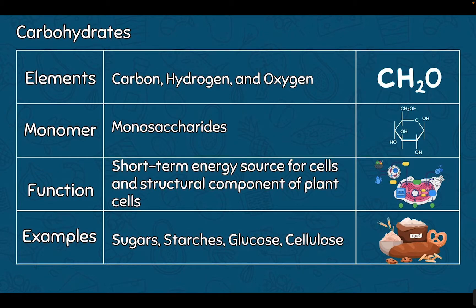Our first macromolecule or biomolecule are carbohydrates. Carbohydrates consist of the elements carbon, hydrogen, and oxygen — only these three elements. They are always going to be in a two-to-one ratio of hydrogens to carbons, shown as CH2O. The monomer — the subunit that builds them up — are the monosaccharides. Saccharides means sugar, mono meaning single. So a single sugar is the building block, and we can make large chains of these. If we repeat a monosaccharide over and over again, we have a polymer of that substance.